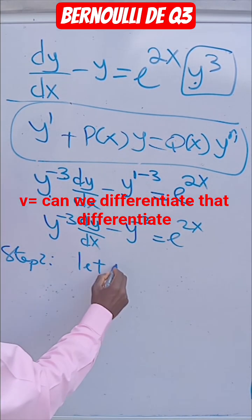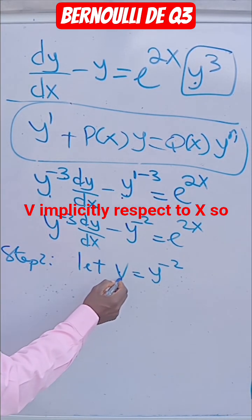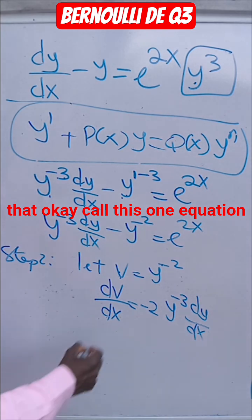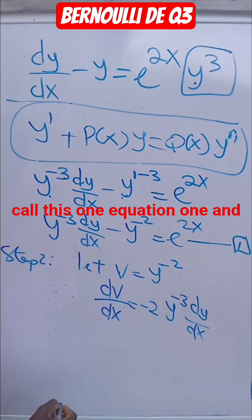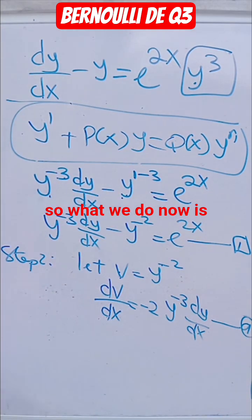Let's... because I would differentiate that, let V implicitly with respect to X. So call this one equation 1, we're coming back to that. That's equation 1, and call this one equation A. So what we're doing now is...